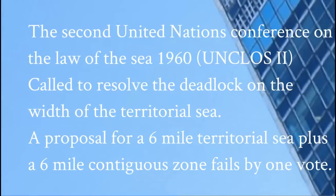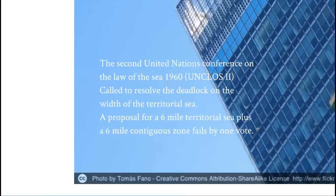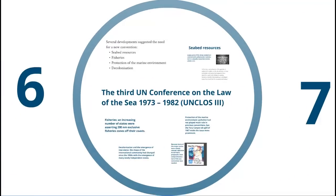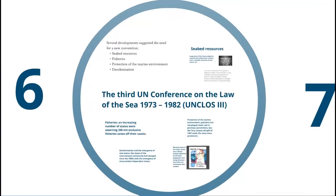The second UN conference on the law of the sea in 1960 is called to resolve this one single issue — the deadlock on the width of the territorial sea. A proposal for a six-mile territorial sea plus a six-mile contiguous zone fails by one vote. This sets the stage for the third UN conference, the really long-running one.